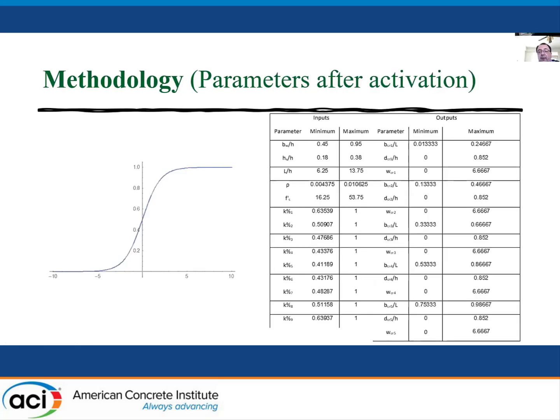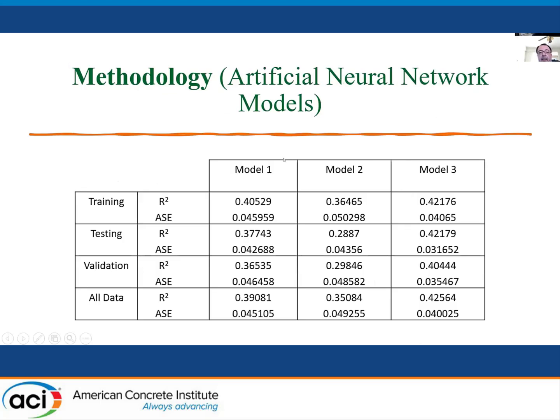This table just shows the sigmoidal function and the minimums and the maxima for the parameters input and output. The artificial neural network had three best models. And because of the complexity of the problem, actually the non-uniqueness of the problem, we see that the best model is model three.